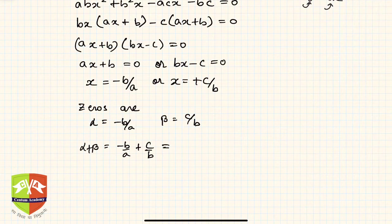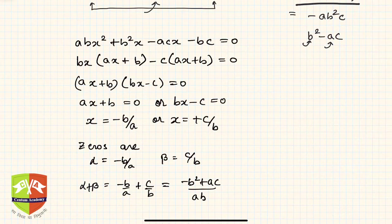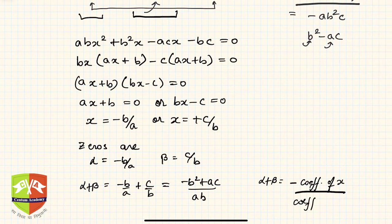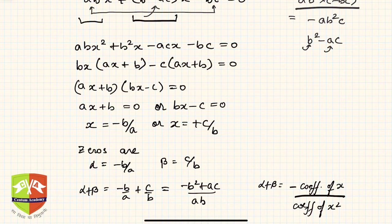Now α + β = -b/a + c/b = (-b² + ac) / ab. From the quadratic polynomial, the sum of roots formula gives minus the coefficient of x divided by the coefficient of x². The coefficient of x here is (b² - ac).